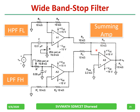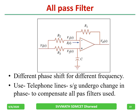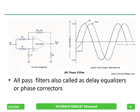For the all pass filter, the name itself gives the idea — it will pass all frequencies. So why is it called a filter? Because it provides a different phase shift for different frequencies. It is used in telephone lines where a signal may undergo a change in phase; to compensate for that phase change, we use this all pass filter. The circuit diagram and the phase shift response are shown here.